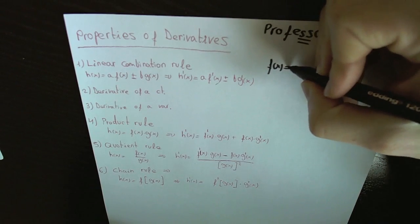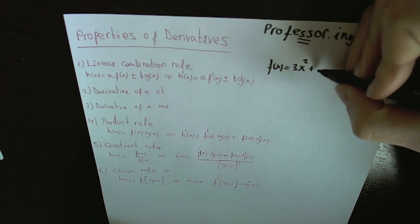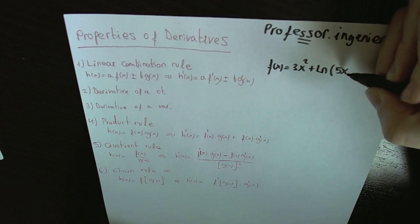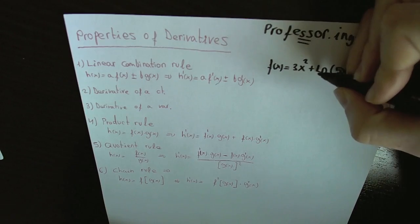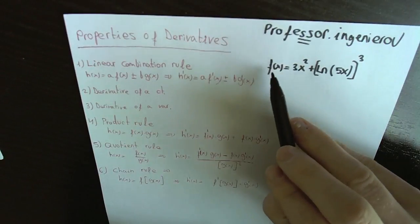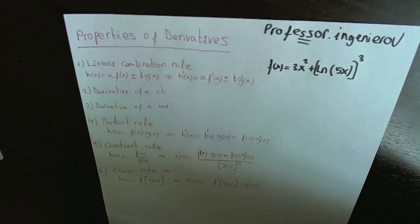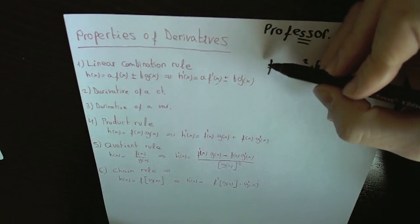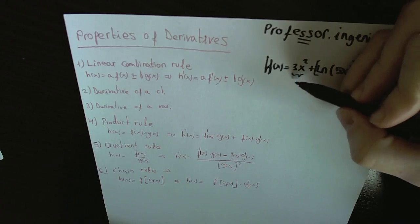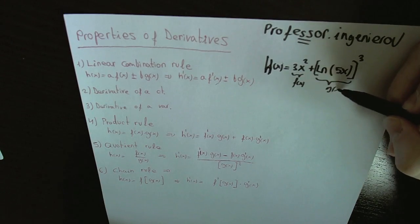For example, f(x) equals 3x squared plus the natural logarithm of 5x raised to the power 3. Don't confuse this f(x) with the formula definition f(x). I could have called it h(x). Here I identify the terms: f(x) is one function and g(x) is the other function.